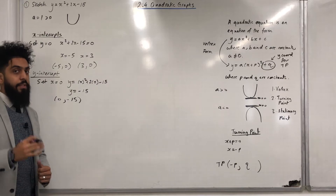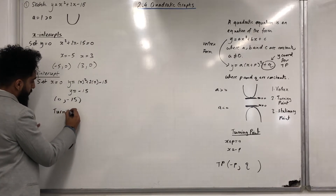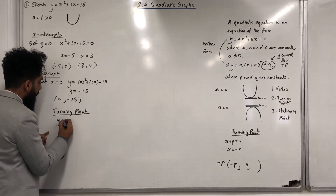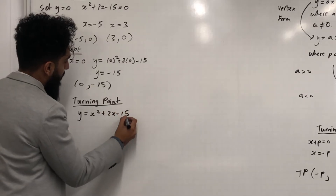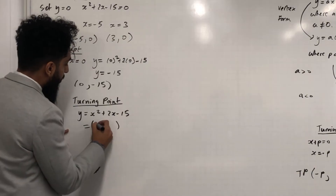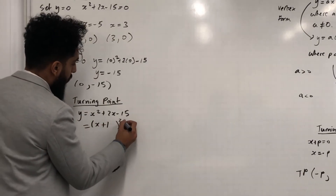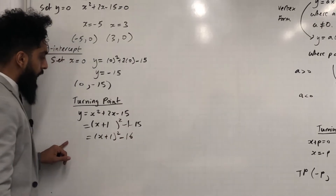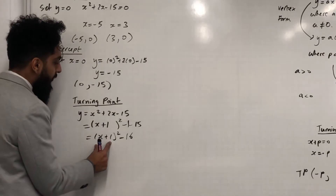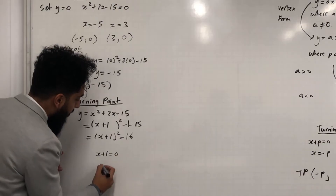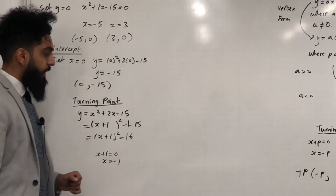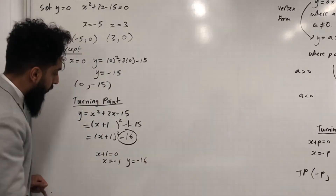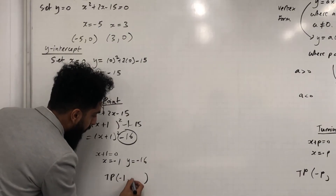Now I can calculate the coordinates for the turning point by completing the square on y = x² + 2x − 15. I get (x + 1)² − 1 − 15, which simplifies to (x + 1)² − 16. Setting x + 1 = 0 gives x = −1. The y-coordinate for the turning point is −16. So the turning point (TP) has coordinates (−1, −16).